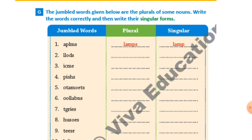Second one: D-O-L-L-S — the correct answer is 'dolls', so singular is 'doll' and plural is 'dolls'. Third one: I-C-M-E — the correct answer is 'mice'. Mice is the plural form and 'mouse' is the singular form.